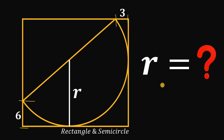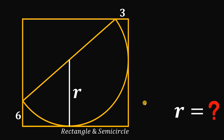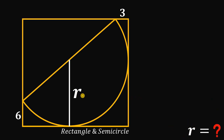You can pause this video if you want to give this problem a try. Now suppose you paused the video — let's see if you got the correct answer. Given this figure, our goal is to solve for the radius of the semicircle, denoted as r.